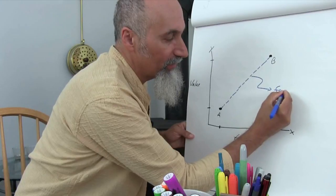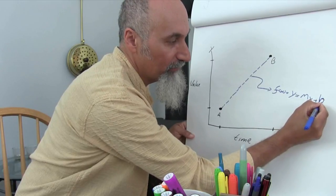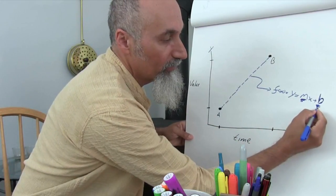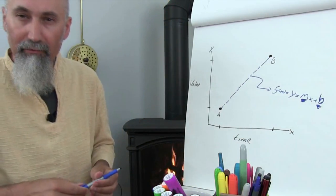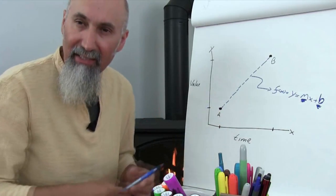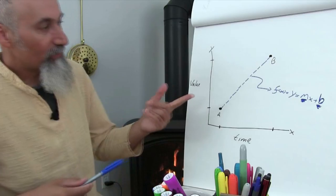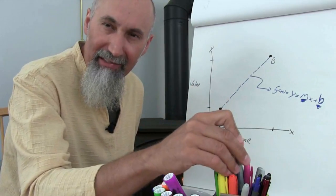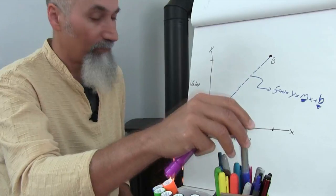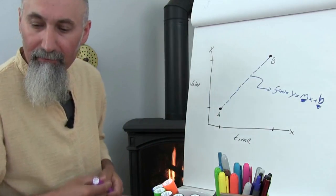We can call this a linear function f(x), where y = mx + b. Whenever you're talking about linear functions, all you need to know is your slope and your y-intercept — where you cross the y-axis — to understand the system. This represents something increasing in value over time in a very predictive way.